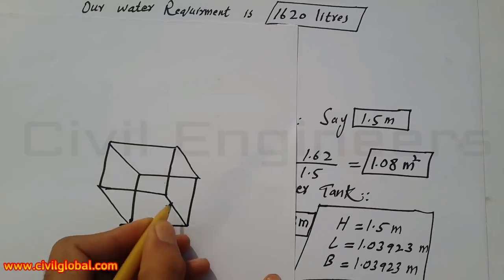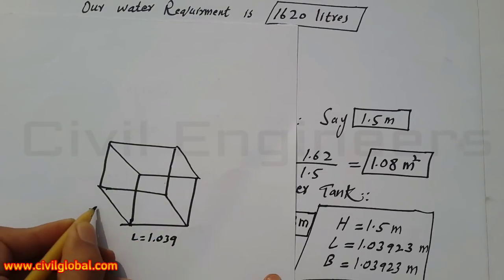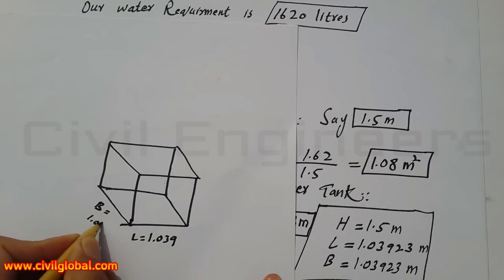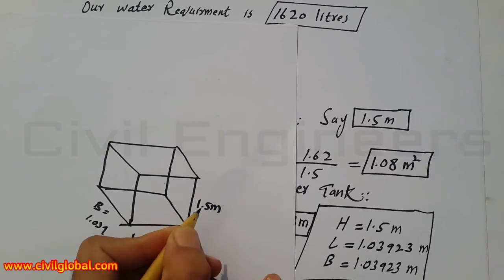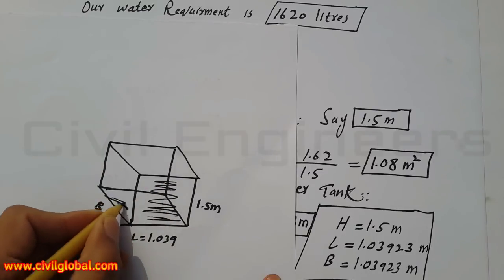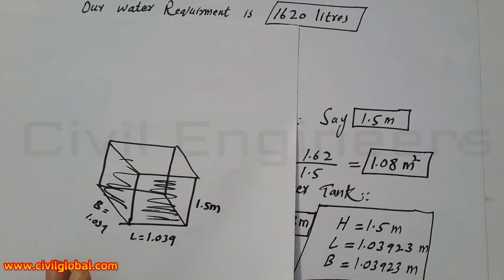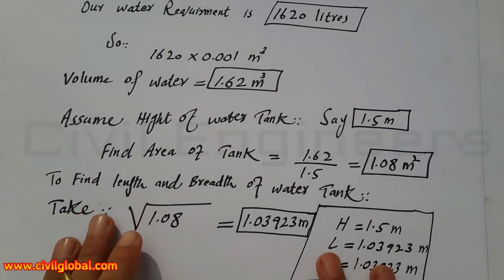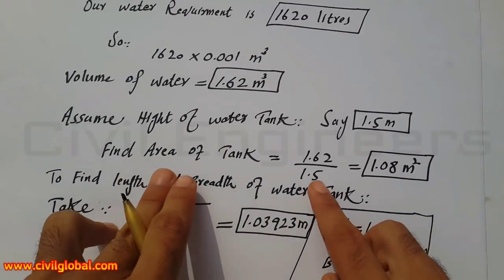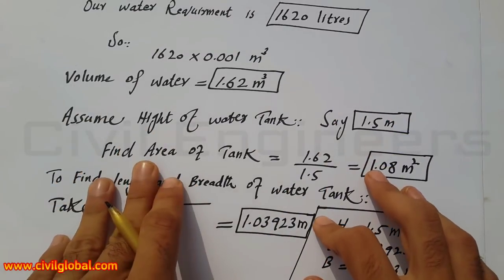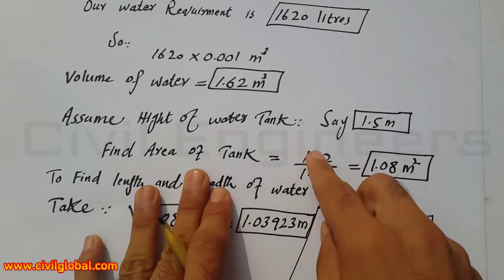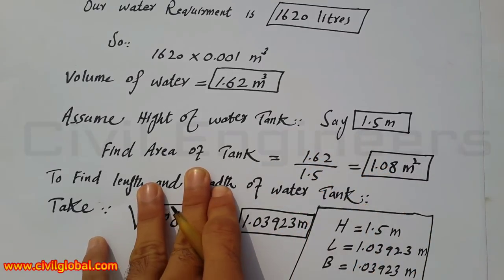So the final water tank dimensions are: length = 1.039 m, width/breadth = 1.039 m, and height = 1.5 meters. This is the water tank design for a 12-member family. You are now able to design a water tank for a school, college, or anything else. Please like and subscribe this channel. Thank you.